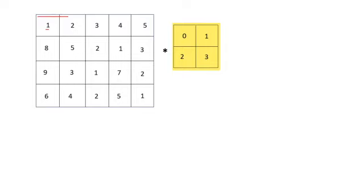This is going to be your first sub-matrix to be considered while calculating the correlation operation. In this sub-matrix, the positions are: 0,0 is 0; 0,1 is 1; 1,0 is 2; and 1,1 is 3. In the kernel, correspondingly: 0,0 is 1; 0,1 is 2; 1,0 is 8; and 1,1 is 5. The elements at the same positions will be multiplied and then all these products are summed up together.